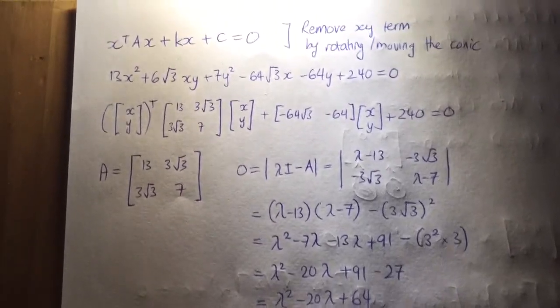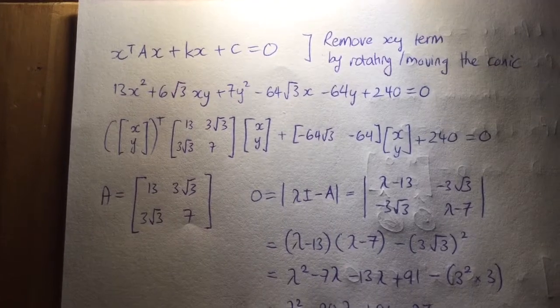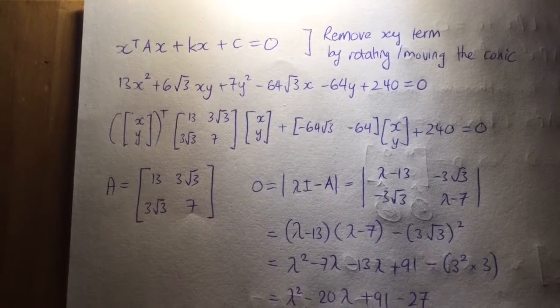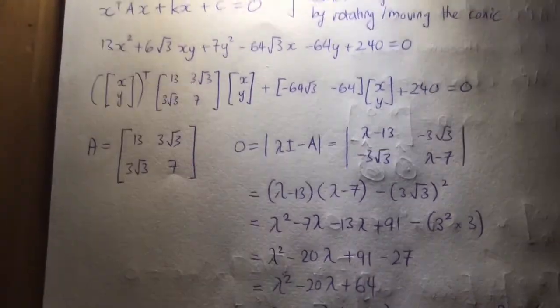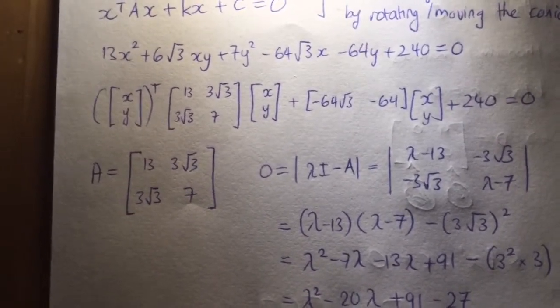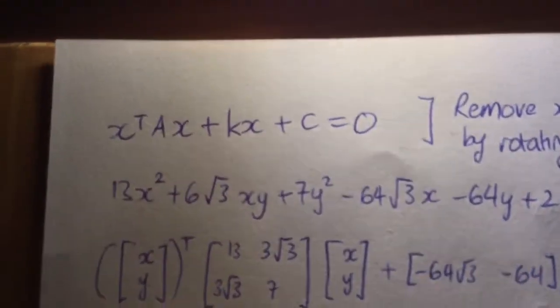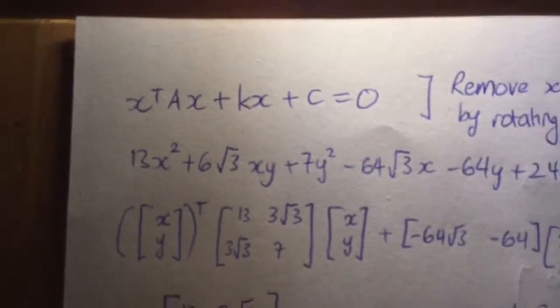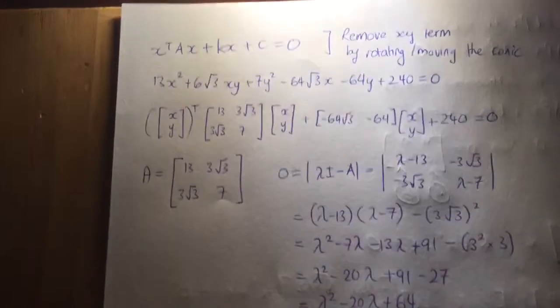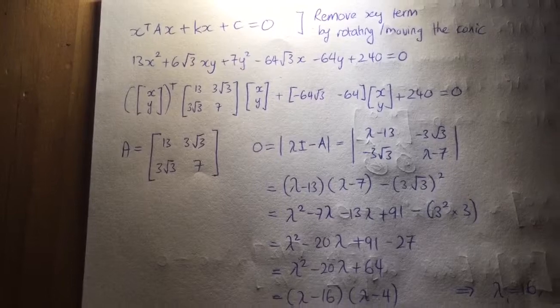Now a key thing is to remember this form: x^T Ax + kx + c = 0. It's going to come in handy when we're looking for things in this form. It has an xy, x squared, y squared, x, y, and a constant. We're going to fit it into that form and then manipulate it with the x transpose, the a, the k, and the c. Remember that formula on the top of the page.